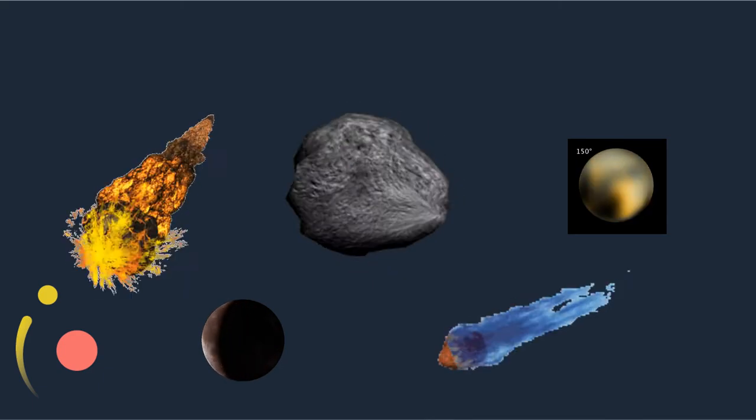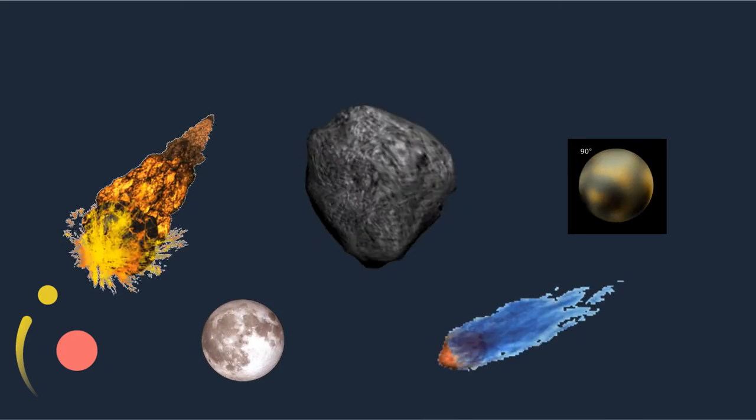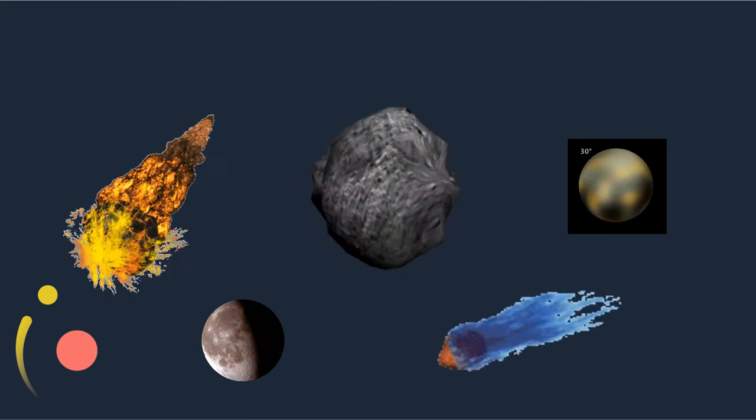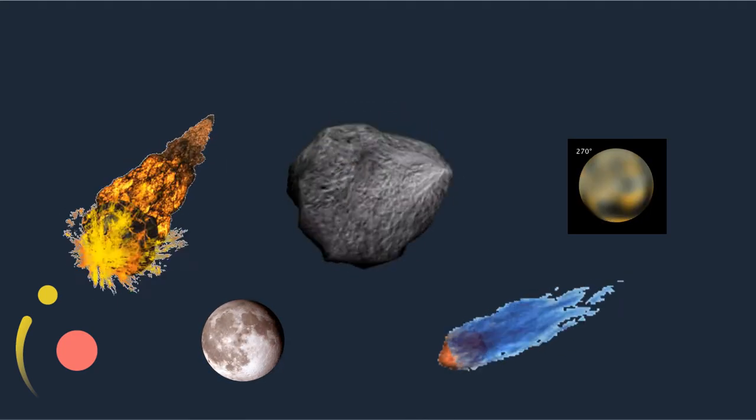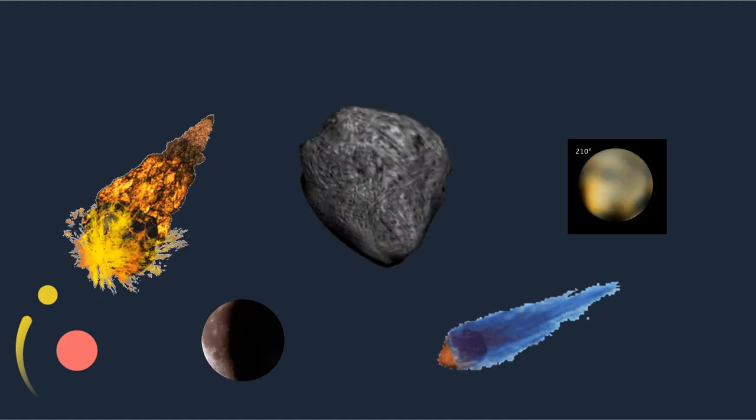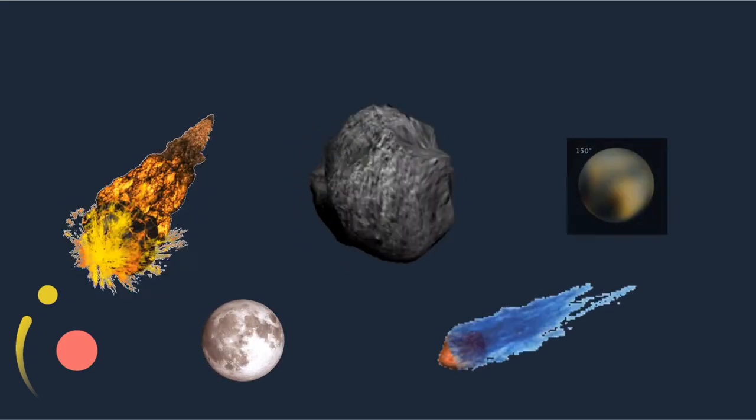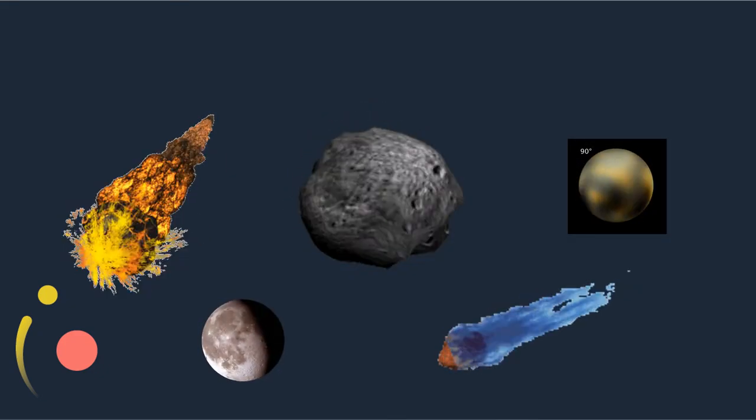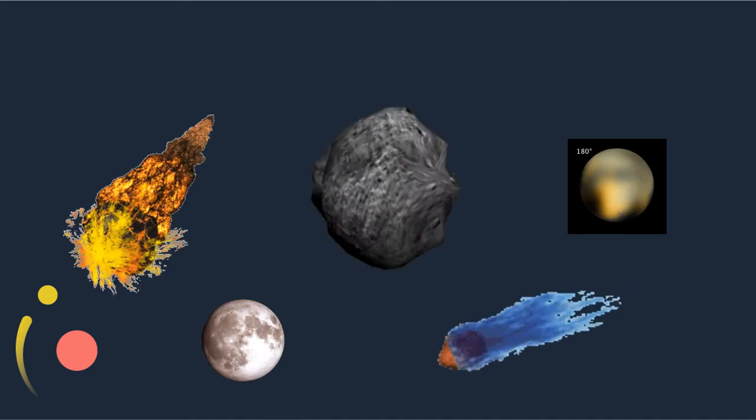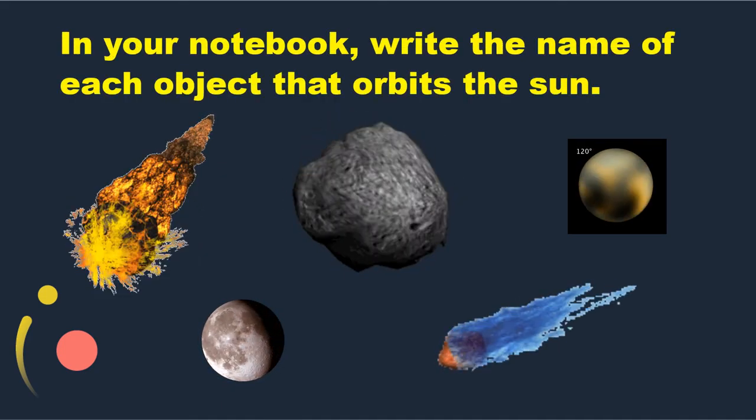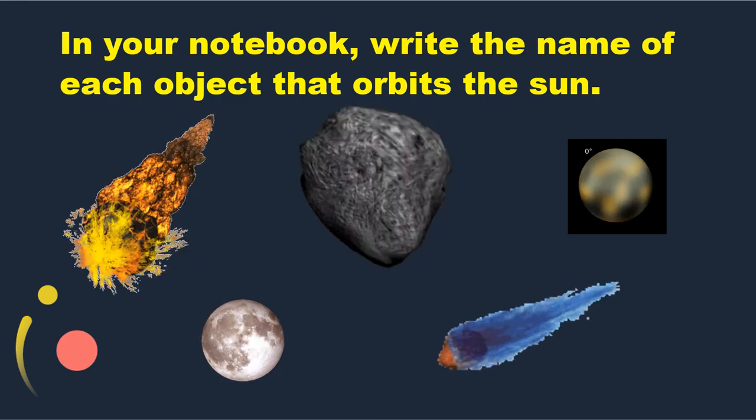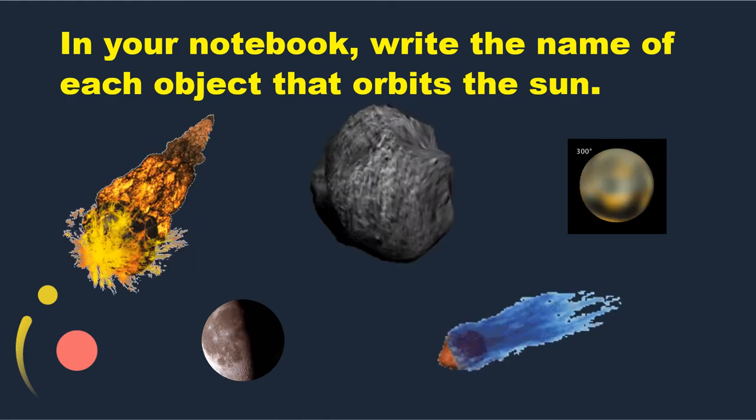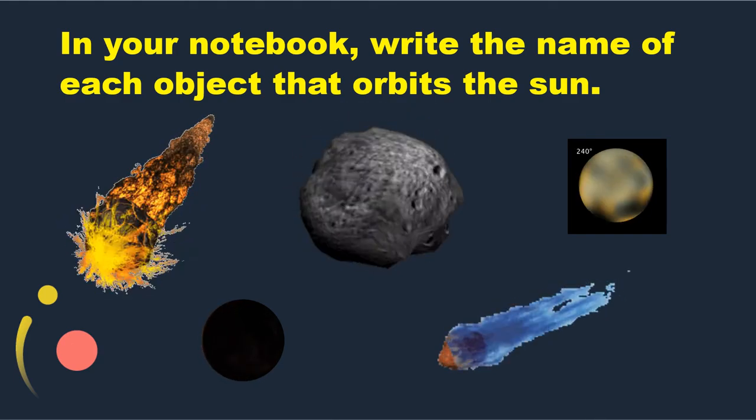Before giving you an activity, let us identify first each picture. Repeat after me. Now, in your notebook, write the correct name of each object that orbits the sun. Observe the correct spelling of your answer.